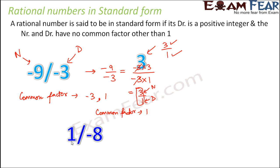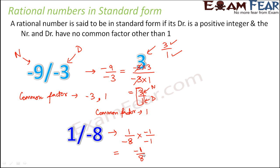Now look at 1 by minus 8. One criterion is that the denominator must be positive. So in order to make the denominator positive, we multiply the numerator and denominator by minus 1, giving us minus 1 divided by 8. The only common factor between 1 and 8 is 1, so minus 1 by 8 is the standard form.